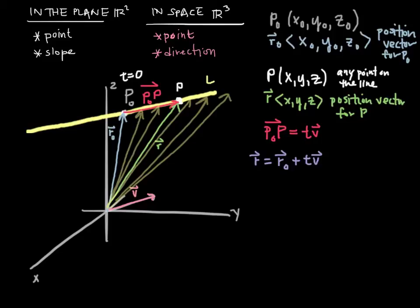It goes on and on forever. In fact, as t increases without bound, the rest of the line onto infinity is given by these position vectors. Remember, the parameterization here is only giving us the position vectors of points that are along this line.